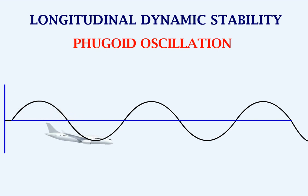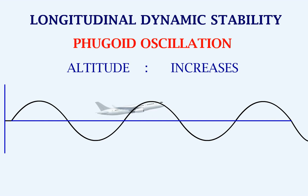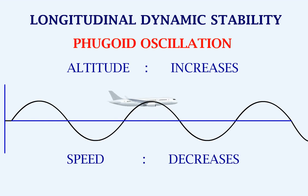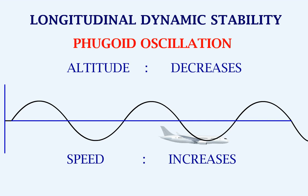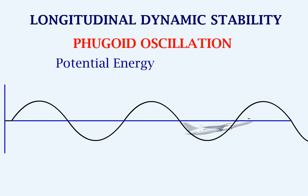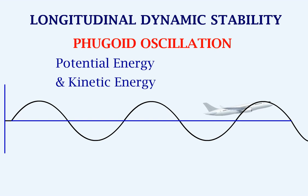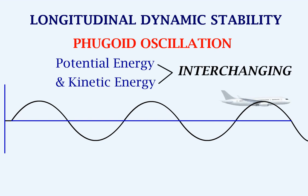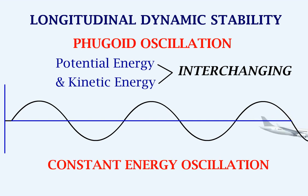In phugoid oscillation, as the aircraft's altitude increases, the speed decreases, and as the altitude decreases, the speed increases. So the potential energy, that is the altitude, and the kinetic energy, that is the velocity, are interchanging. So this can be called a constant energy oscillation.